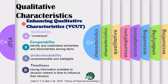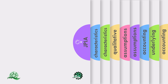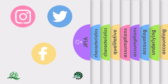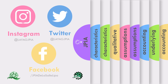That's it for enhancing qualitative characteristics. To help you remember, use VICOT — an acronym for Verifiability, Comparability, Understandability, and Timeliness. And that's it for this video! I hope that you learned something today and that this tutorial will help you study the conceptual framework. For more updates, follow us on our social media accounts — on Instagram and Twitter at layagjpia, and on Facebook at slash jpia de la solipa. Best of luck, JPians! Thank you for watching!